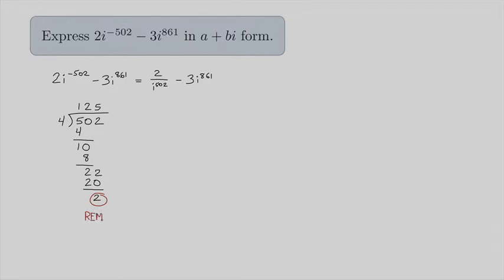That's what I want to pay attention to. So this tells me, with the remainder of 2, that i to the 502nd power is the same thing as i to the 2nd power. And we know that i to the 2nd power is just negative 1.